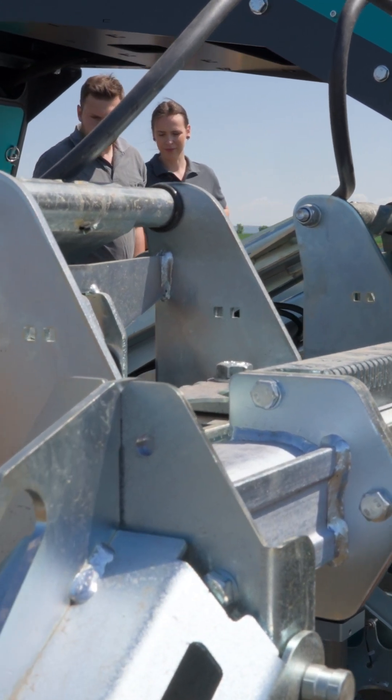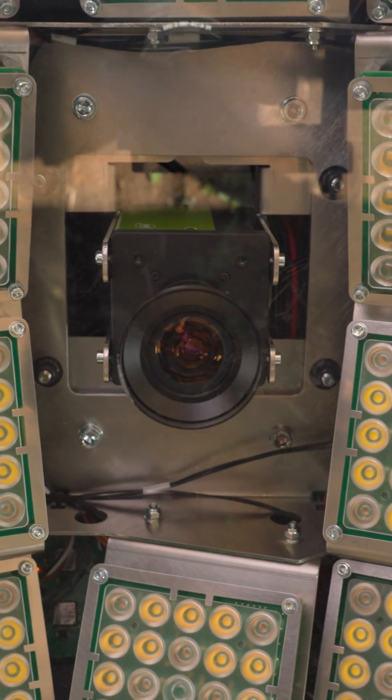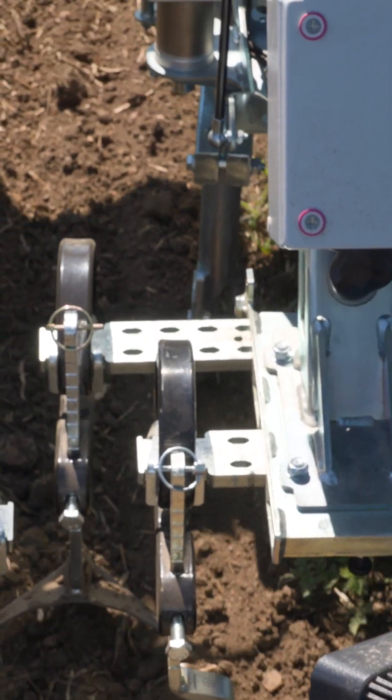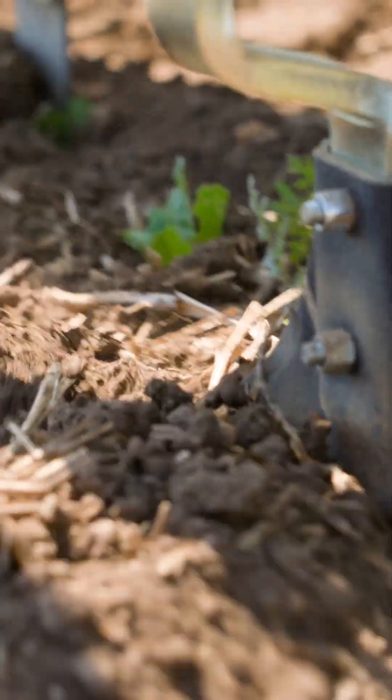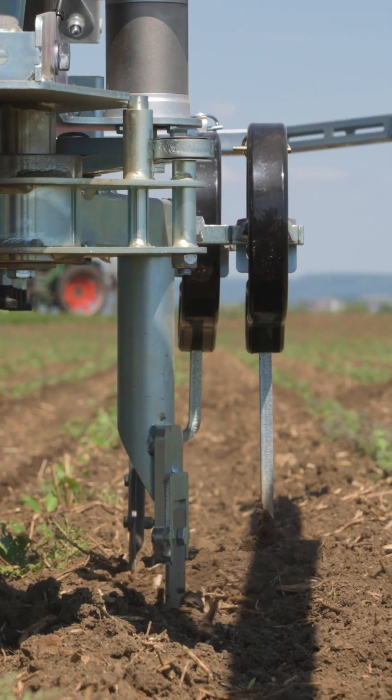Our robot can detect all the crops and around our crops we can weed in between the rows but also with our swivels in between the plants.